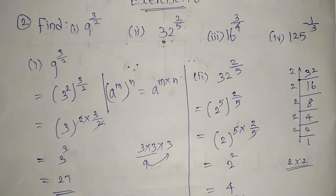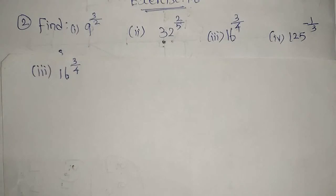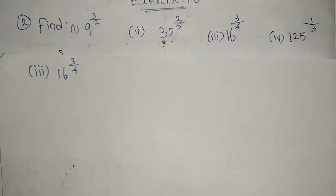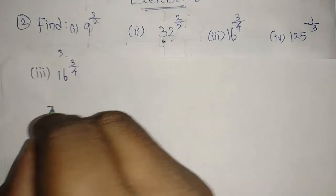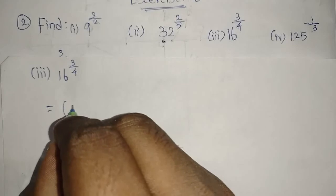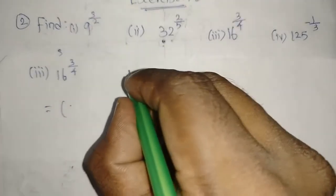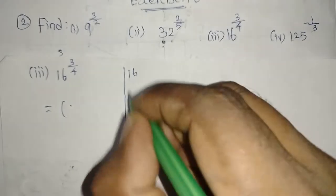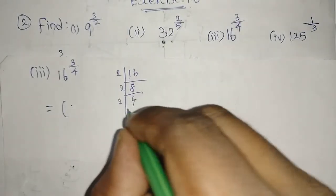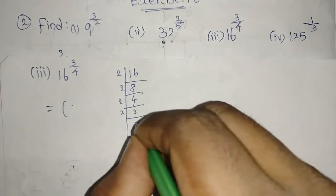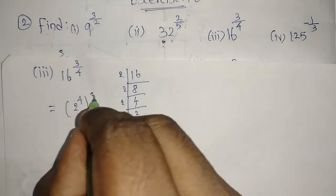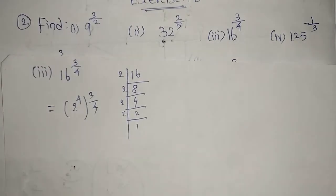For the third question: 16 whole power 3 by 4. The number 16 is 4 squared, and 4 can be written as 2 squared, so prime factorization is better here. In the prime factorization of 16: 2 times 8, again 2 times 4, again 2 times 2, again 2 times 1 — that gives us 1, 2, 3, 4 twos. So 16 equals 2 power 4, and it becomes 2 power 4 whole power 3 by 4.